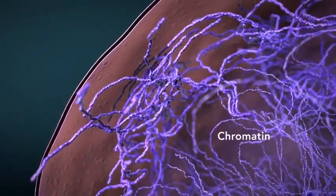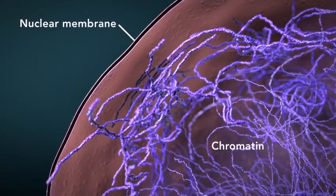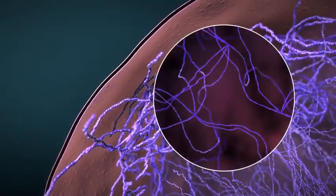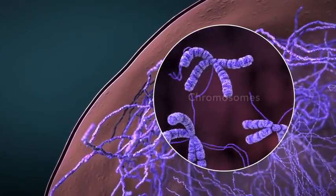Chromatin is the tangled, spread-out form of DNA found inside the nuclear membrane. When a cell is ready to divide, DNA condenses into structures known as chromosomes.